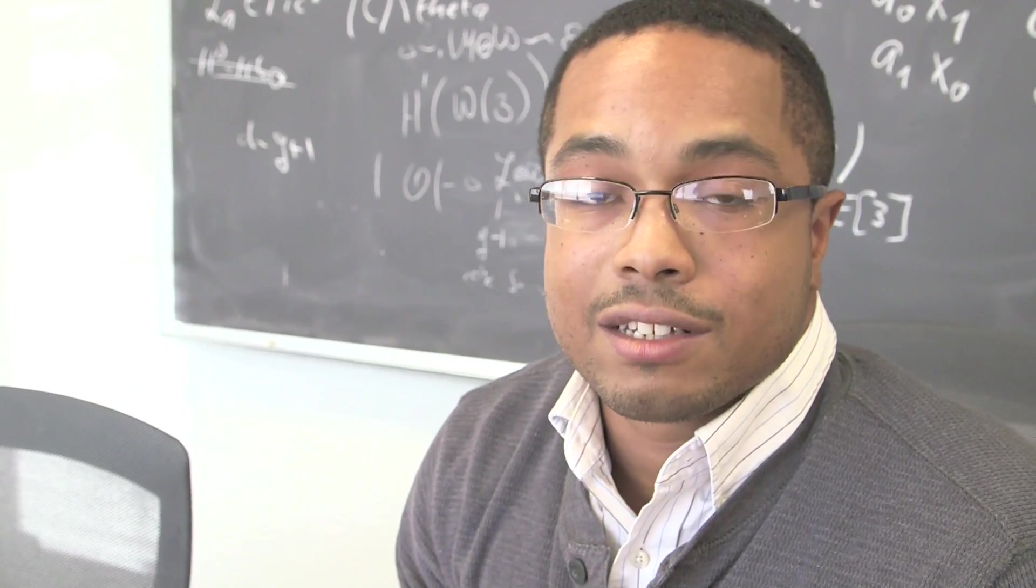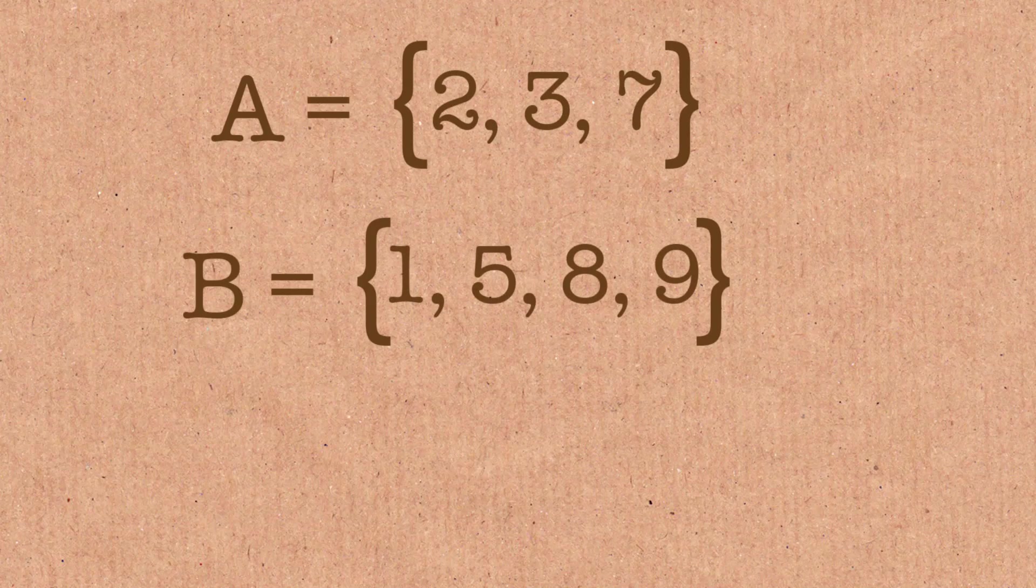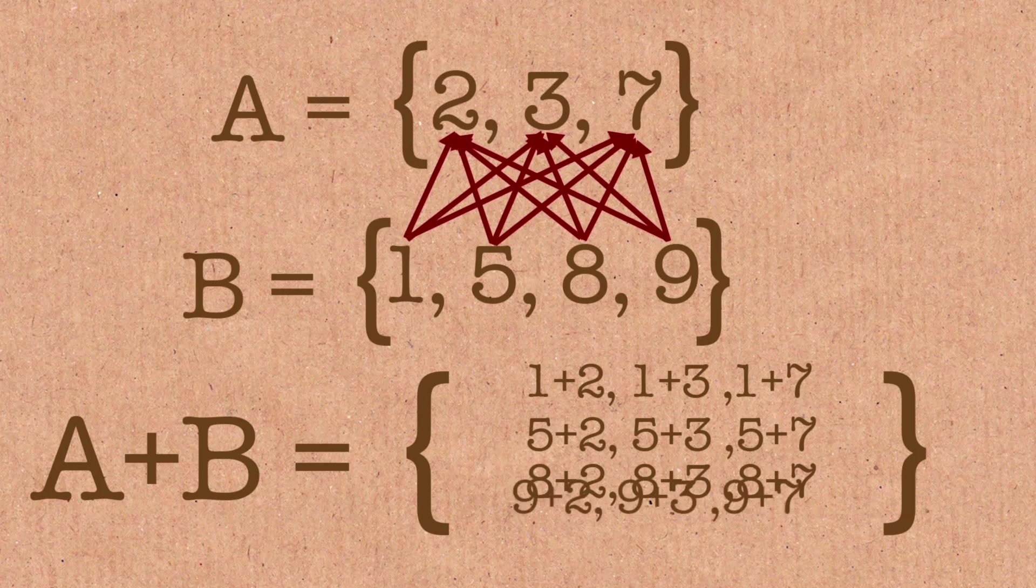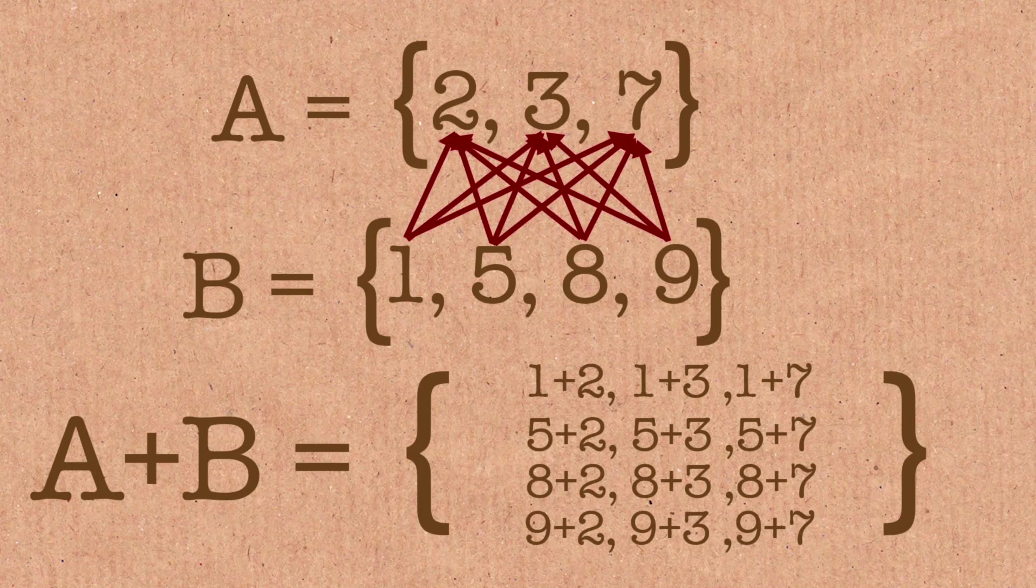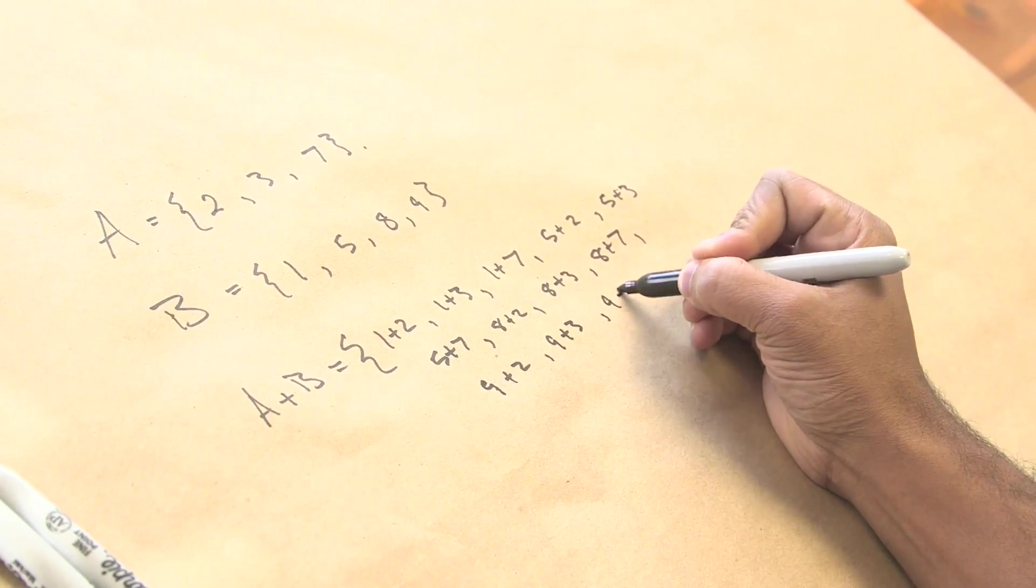What we want to do is add these two sets together. And so what do I mean by that? What we're going to do is add each number in the set pairwise. So I'll say that A plus B is equal to 1 plus 2, 1 plus 3, 8 plus 3 plus 2, 9 plus 3, and 9 plus 7.